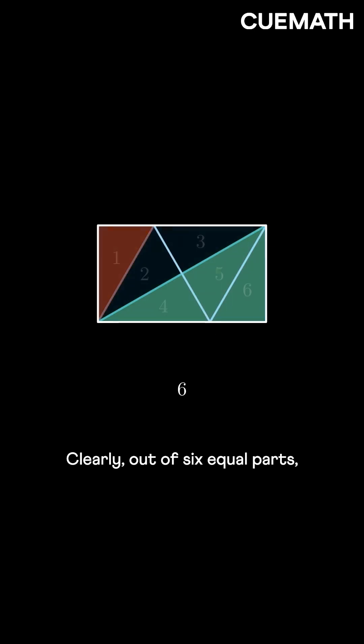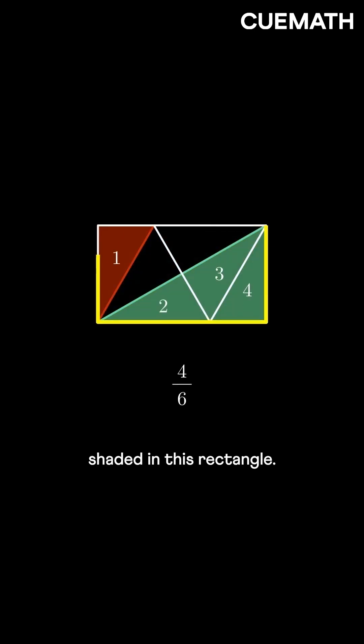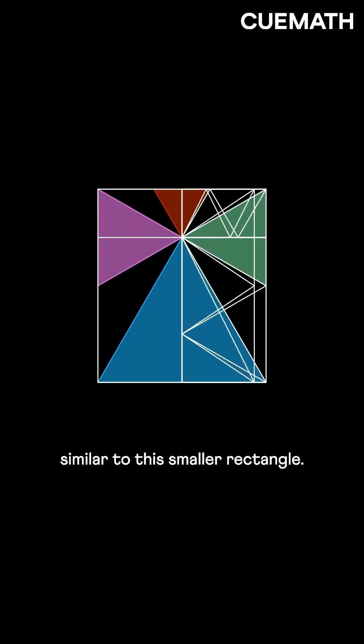Clearly, out of six equal parts, four parts are shaded in this rectangle. That is, two-thirds of this rectangle is shaded. All other rectangles are similar to this smaller rectangle.